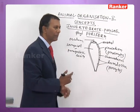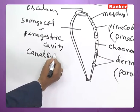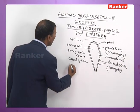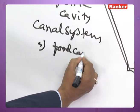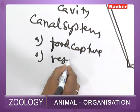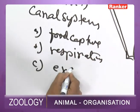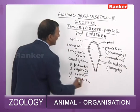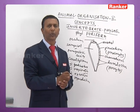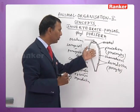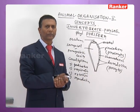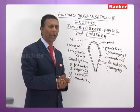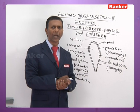Porifera are characterized by the presence of a canal system, also called the aquiferous system. The most important functions of the canal system are: food capture, respiration, excretion, and reproduction — it also helps in carrying gametes, preferably spermatozoa, from one animal to another. The mode of circulation of water through the intercommunicating chambers of the body wall and exit through the osculum is called the canal system.